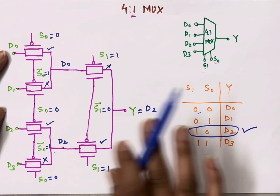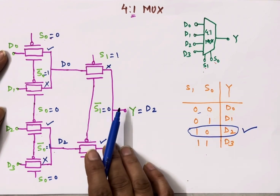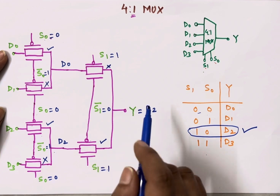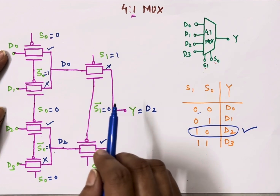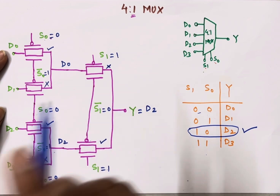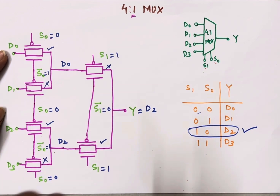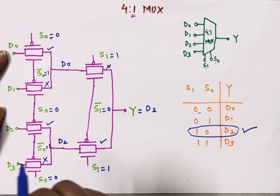So in this way we can implement a 2-to-1 multiplexer or a 4-to-1 multiplexer using transmission gates. If you found this video useful, please like it, share it with your friends, and please subscribe to my channel. Thank you so much for watching.